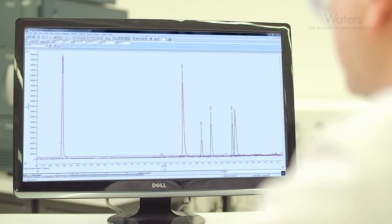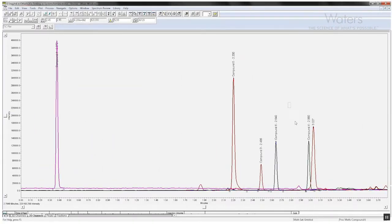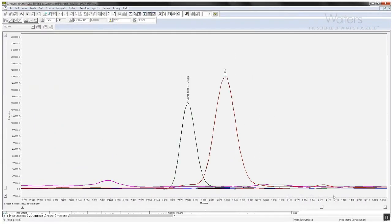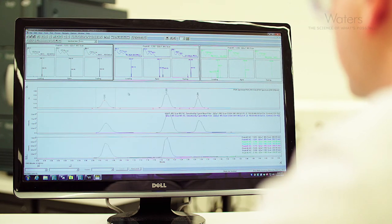Using the Acuity QDA detector will ensure that you are seeing everything in your sample. This is an example of an analysis of sweeteners in which not all of the compounds can be detected using optical detectors. Adding the capability of mass detection ensures that you see all compounds and you can also use the mass data for quantitation. In short, you increase the confidence in your results.